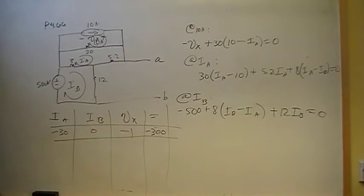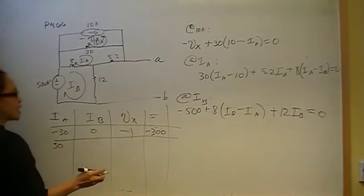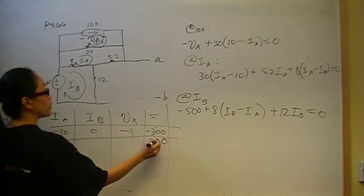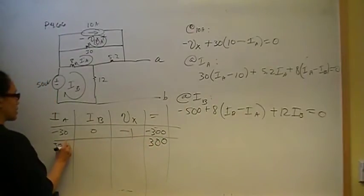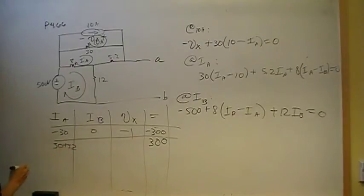For our mesh equation at I-A, we have 30, positive 30 for I-A. And then a negative 300 that's going to come on the other side as positive 300. And then we have plus 5.2 I-A and then plus 8 I-A.